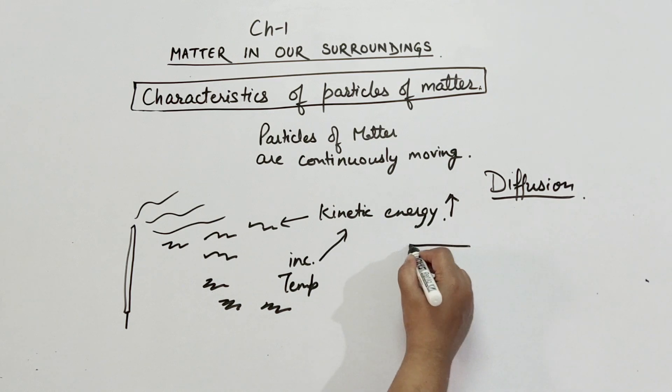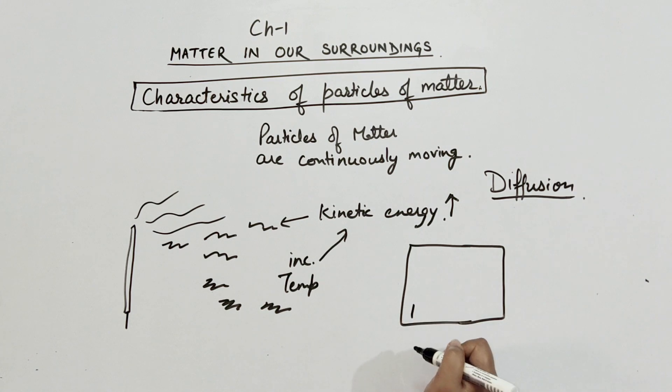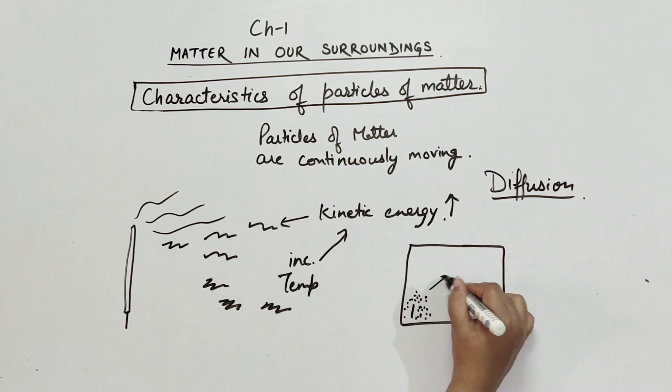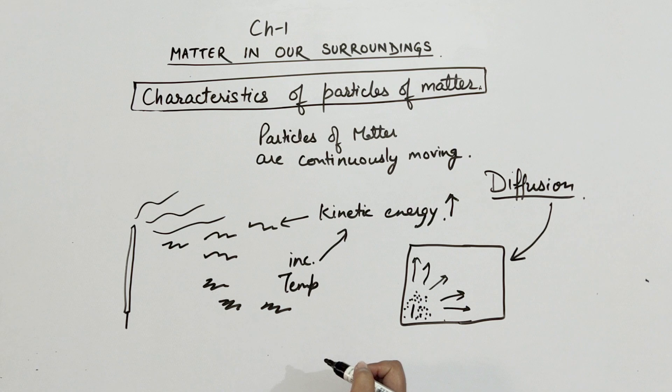When you place an incense stick in one corner of your room, then the concentration of perfume particles is more in that corner as compared to the rest of the room. So the particles moved from high concentration to low concentration and this process is known as diffusion. The rate of diffusion is fastest in gases, then in liquid, and then in solid.